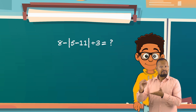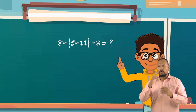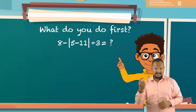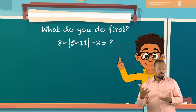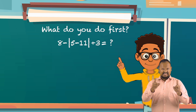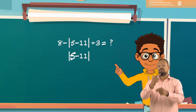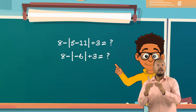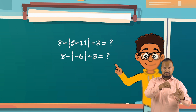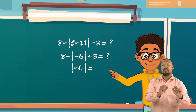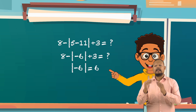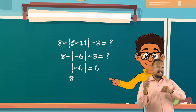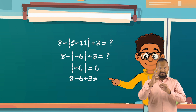Say you have an equation that looks like this: 8 minus the absolute value of 5 minus 11, plus 3. What do you do first? If you said figure out the absolute value of 5 minus 11, you are correct. 5 minus 11 equals negative 6. And since the negative symbol is on the inside of the absolute value bars, we know that the absolute value of negative 6 equals 6. With that all figured out, we are ready to solve the equation: 8 minus 6 plus 3 equals 5.